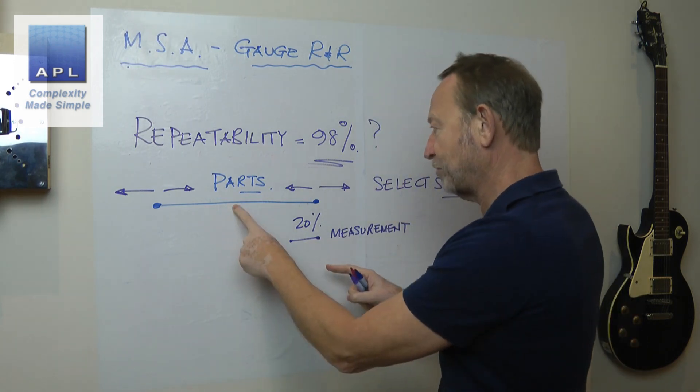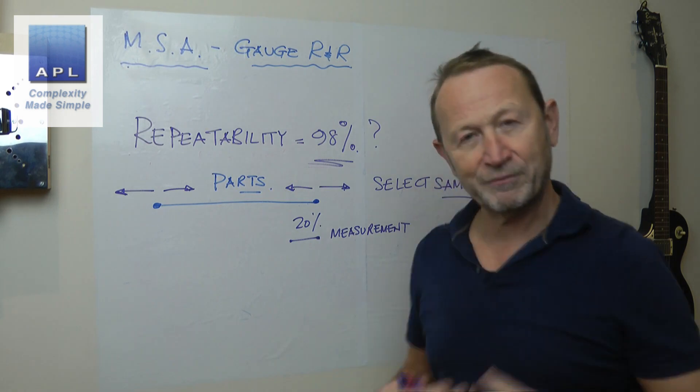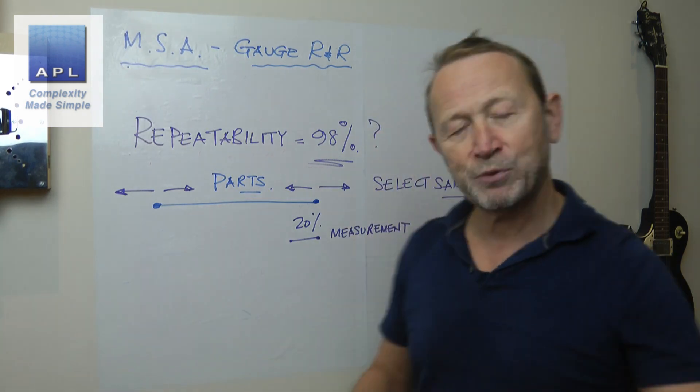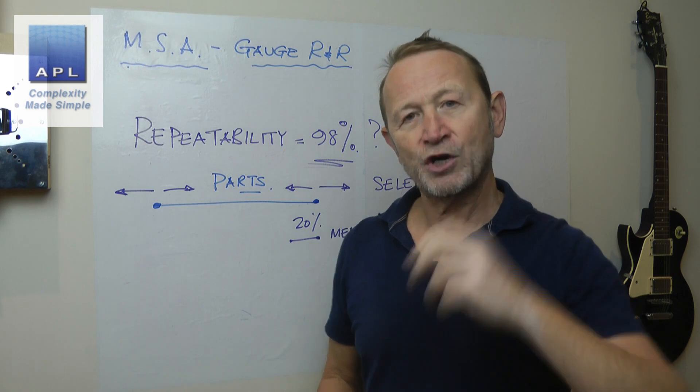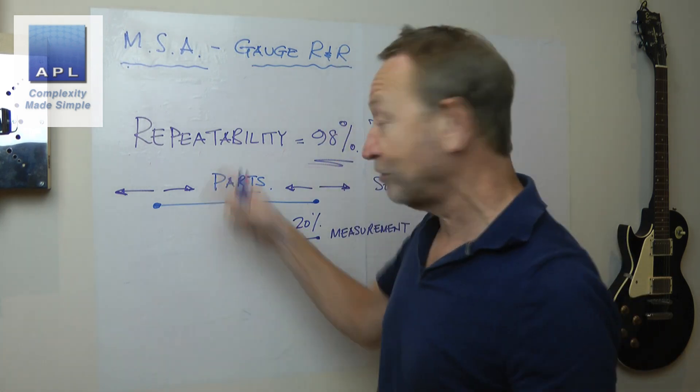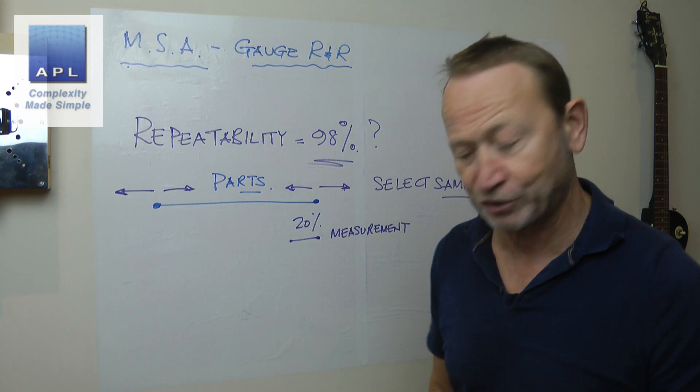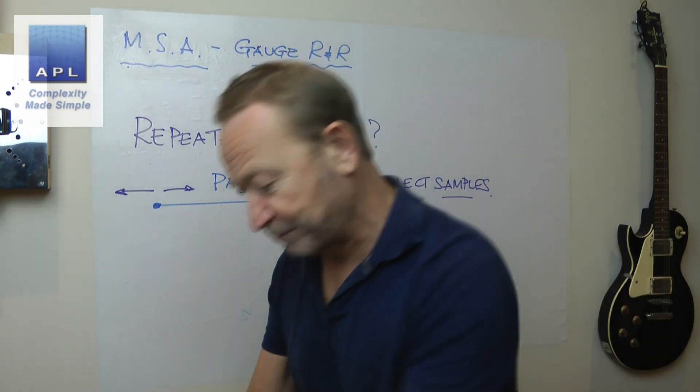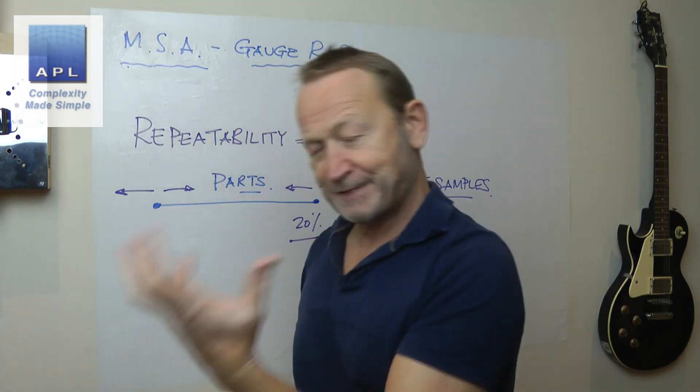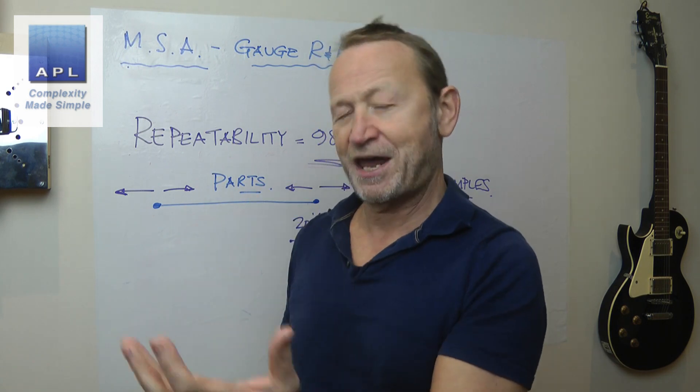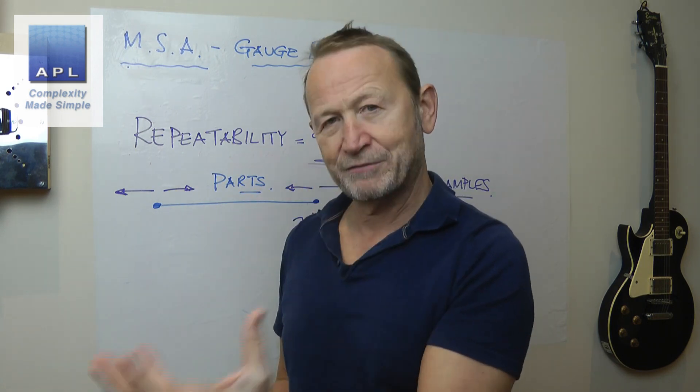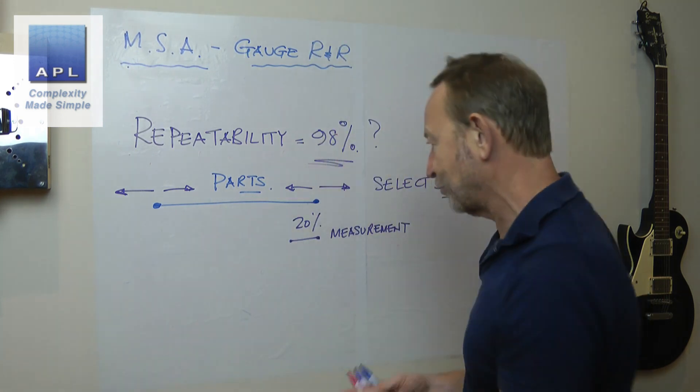Now, in order to sample the parts correctly, what you must do is make a bucket of parts out of your manufacturing process. Simply walk up to that bucket, just randomly mix them all around. And I would say, take 10.